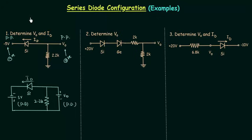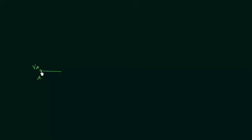So the first thing I will explain is how to deal with potential at points. For this I will take a very simple example in which potential at points are given. This is point A — Va is the potential at this point. There is another point B — Vb is the potential at this point.